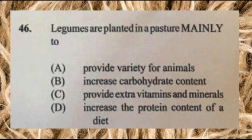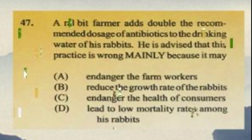Question number forty-six: legumes are planted in a pasture mainly to A) provide variety for animals, B) increase carbohydrate content, C) provide extra vitamins and minerals, D) increase the protein content of a diet. The answer is D, increase the protein content of the diet.